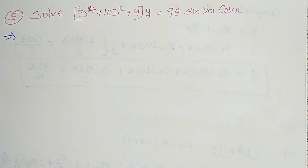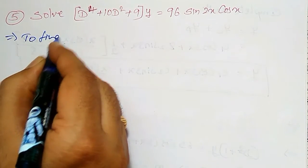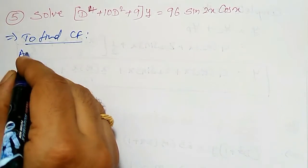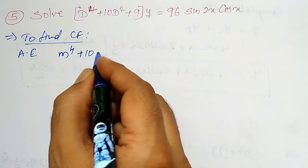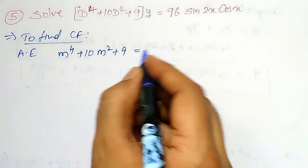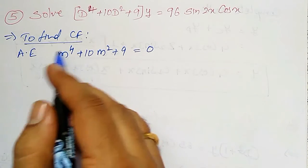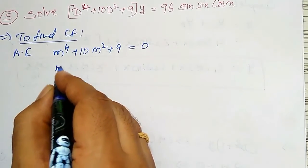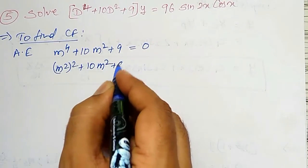First of all, the solution contains two parts. First I will calculate to find CF, the complementary function. The auxiliary equation is given by m to the power 4 plus 10m squared plus 9 equal to 0. I can convert it in terms of a quadratic equation by writing this as m squared squared plus 10m squared plus 9 equal to 0.